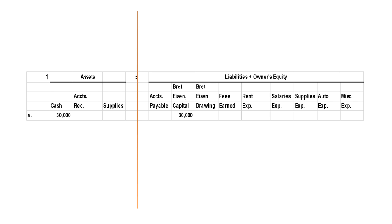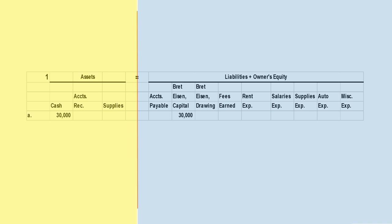Everything on the right-hand side of the equation is owner's equity or a liability; everything on the left-hand side is an asset. Everything shown in yellow is going to be an asset; everything shown in blue is going to be a liability or some kind of owner's equity. Capital and fees earned are increases to owner's equity, while drawing and expenses are decreases to owner's equity.